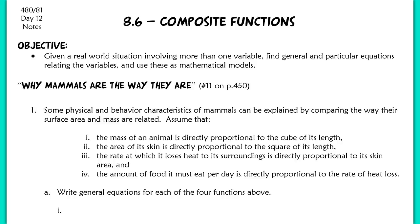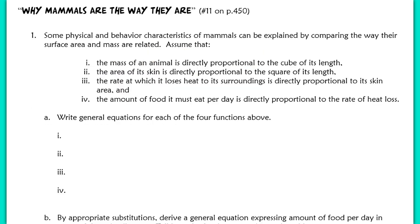This lesson is for section 8-6 on composite functions. Our objective for today: we're going to be given a real-world situation that involves more than one variable, and we'll find general and particular equations relating the variables to one another. We'll then use them as mathematical models to answer some additional questions. Our first example, 'Why Mammals Are the Way They Are,' is number 11 on page 450. Please pause the video so that you can read the first portion of the problem, and we'll pick up with part A.